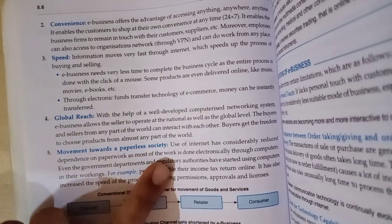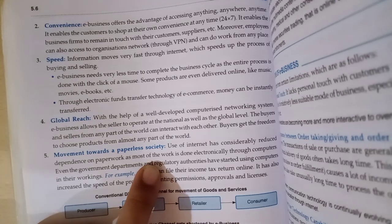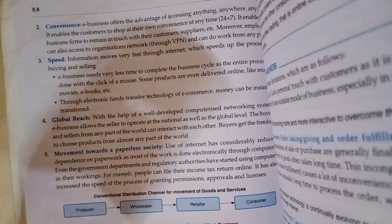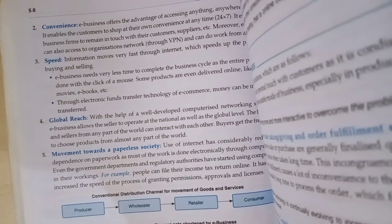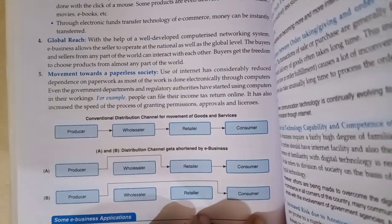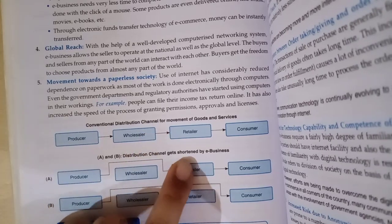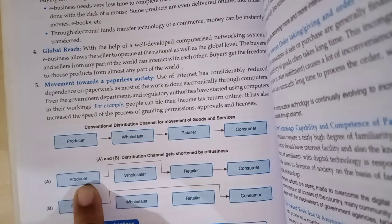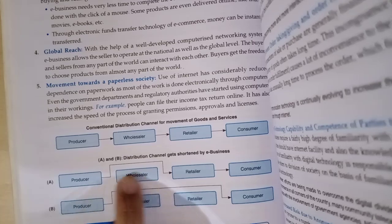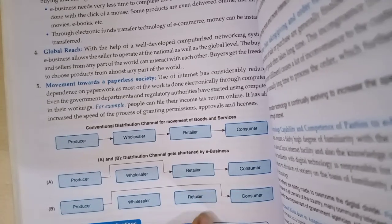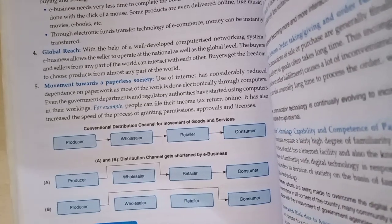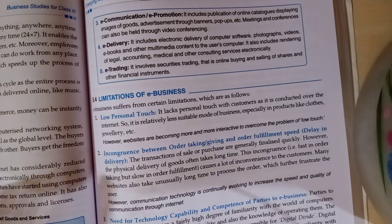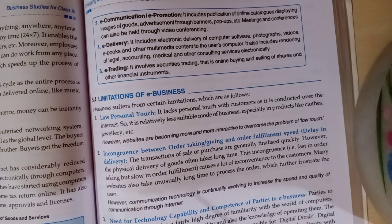Another benefit is movement towards a paperless society. In traditional business every record is maintained on paper, but in digital mediums records — orders, payments, reports — are created digitally. Also, distribution channels can be shortened through e-business. In traditional business goods move from producer to wholesaler to retailer to customer, but in e-business the producer can directly reach the retailer or even the customer, cutting out intermediaries. The next topic — limitations of e-business — will be covered in the next video.